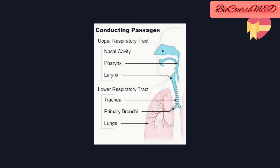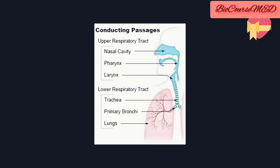Certain organs are involved in the overall structure and mechanism of the respiratory system. Those organs that take part in the respiratory breathing mechanism include the nose, pharynx, larynx, trachea, bronchi, and lungs. These are the organs that take part in the respiratory system mechanism.